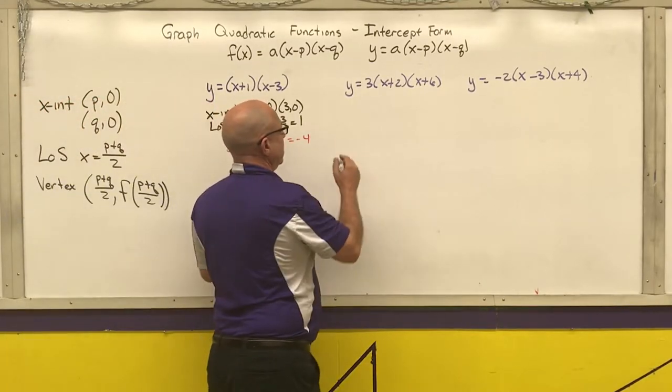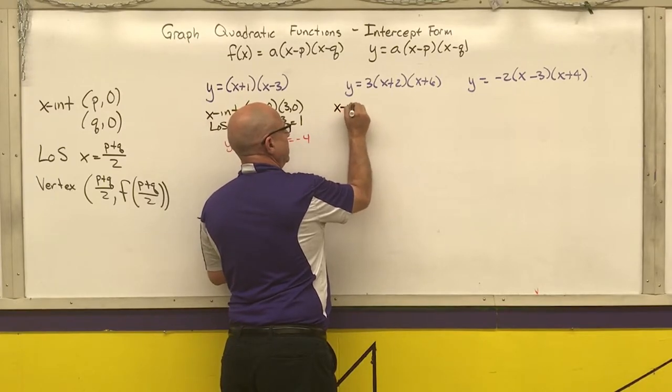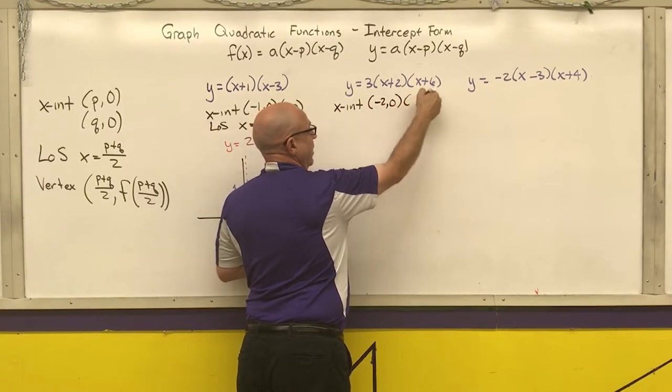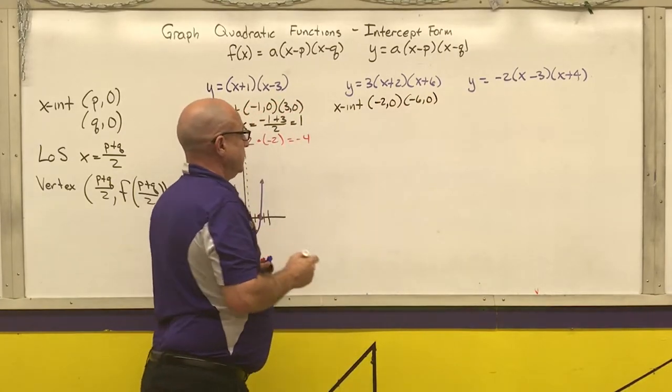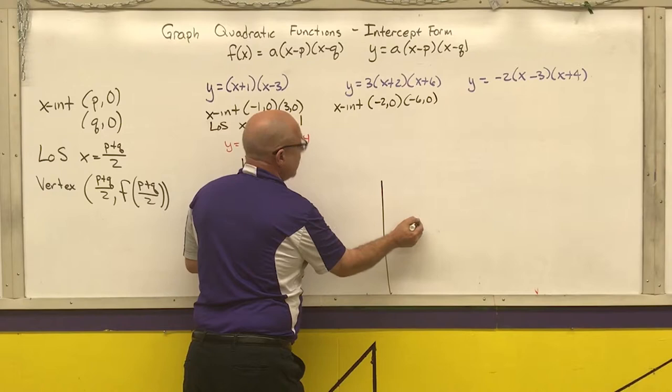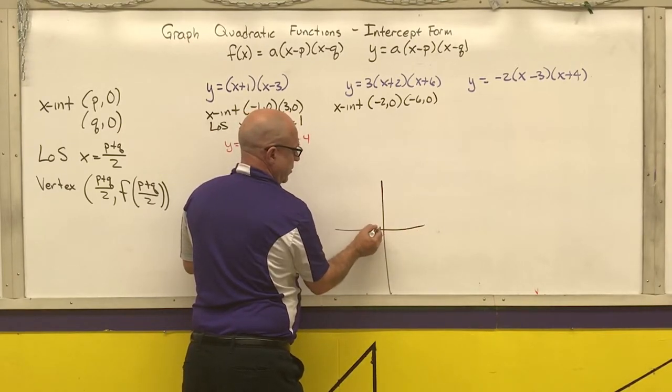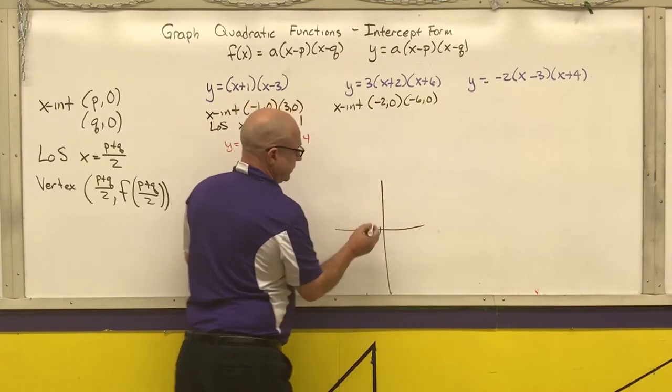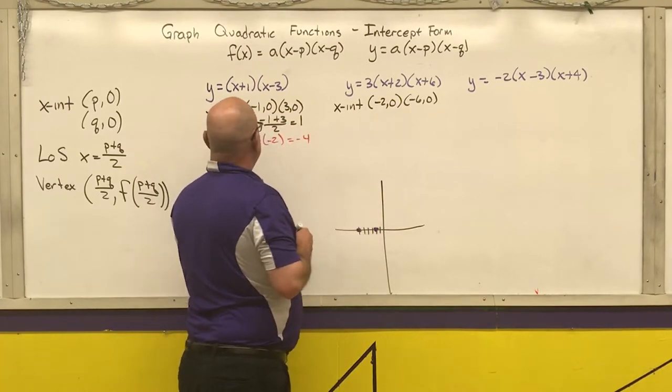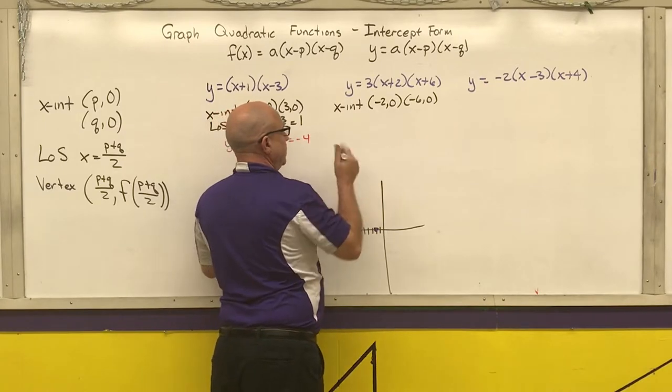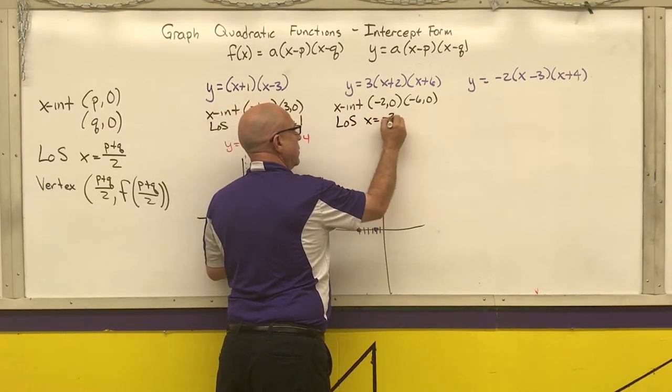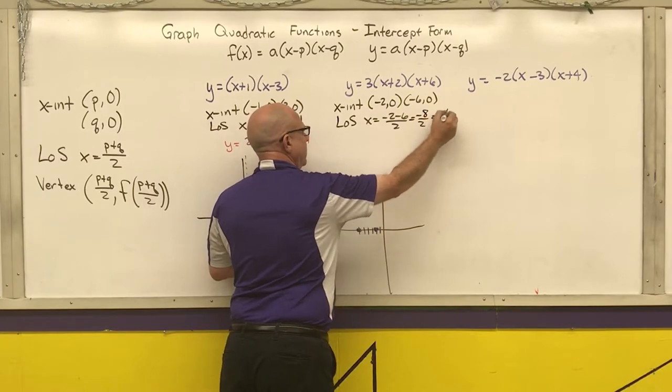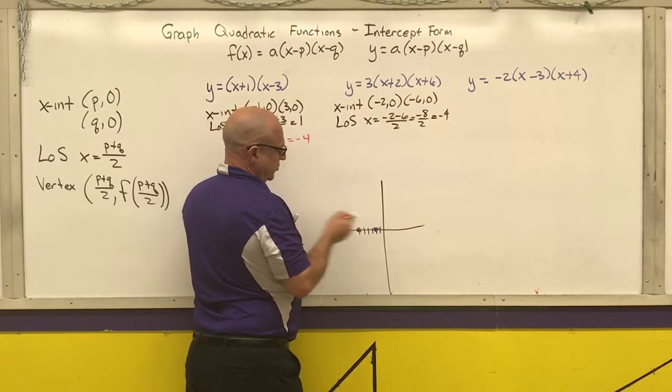Next example, x-intercepts are at negative 2, 0 and negative 6, 0. My line of symmetry is halfway in between those two. Negative 2 minus 6 is negative 8. Negative 8 over 2 is negative 4. So my line of symmetry goes through negative 4.